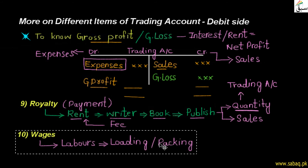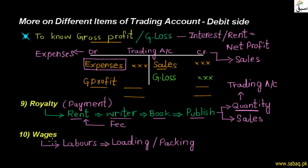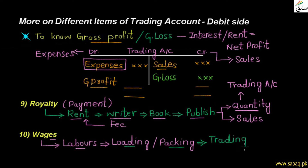Then we have wages. Wages are paid to workers — they are resources for production. Wages are also a direct expense which is directly related to what we sell to the ultimate customer. We are paying wages in order to produce and sell. This is our direct expense, so we also write wages on the debit side of the trading account.